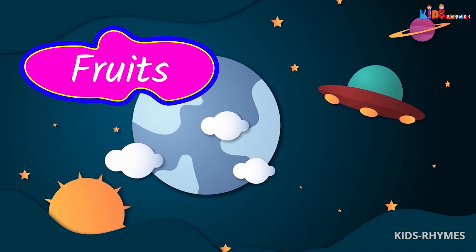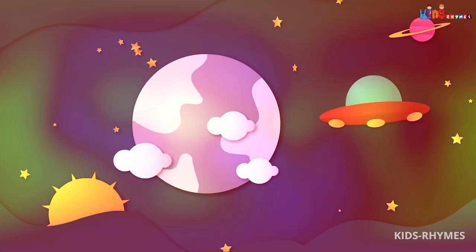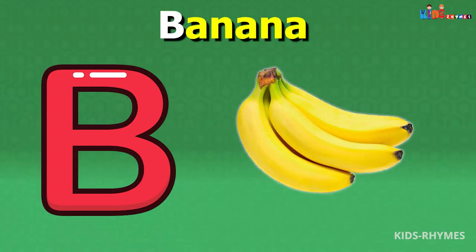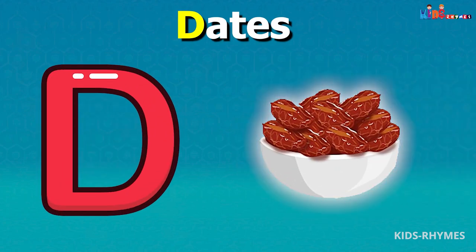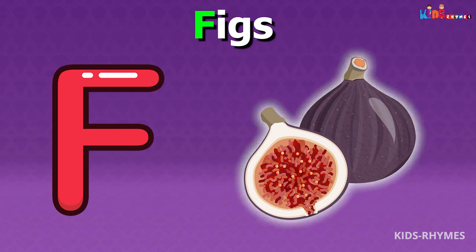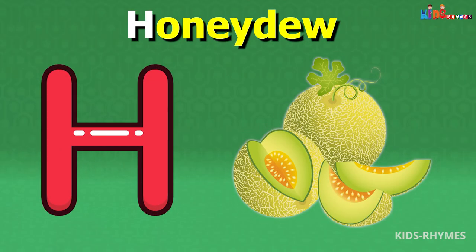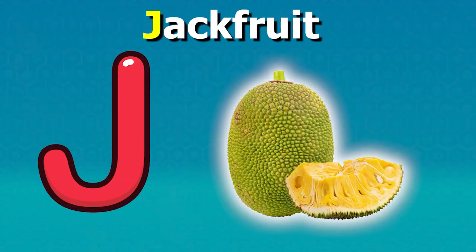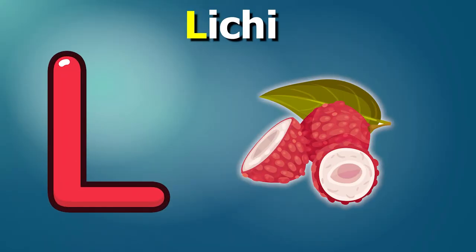Fruits name according to alphabets: A for apricots, B for bananas, C for cherries, D for dates, E for elderberries, F for figs, G for grapes, H for honeydew, I for damson plum, J for jackfruit, K for kiwis, L for lychees.